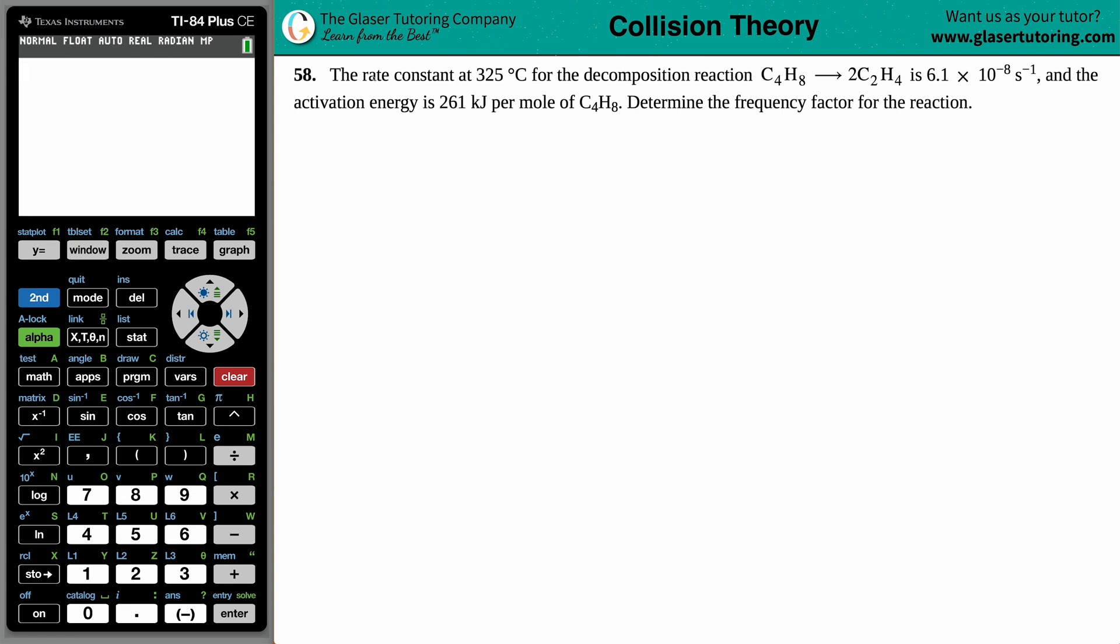Number 58. The rate constant at 325 degrees Celsius for the decomposition reaction of C4H8, which will yield two C2H4s, is 6.1 times 10 to the eighth per second. And the activation energy is 261 kilojoules per mole of the C4H8. Determine the frequency factor of the reaction.